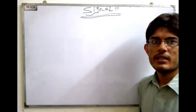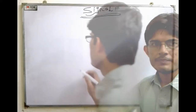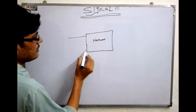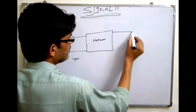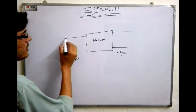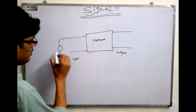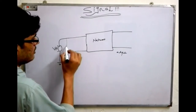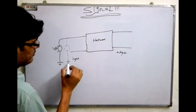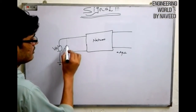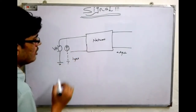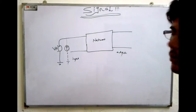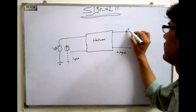Signal is considered as a physical variable that is a function of time. Consider a network — this is my network — with an input side and an output side. The input can be described by an independent voltage source or an independent current source. At the output side we get the voltage denoted by V0 or current from the network.